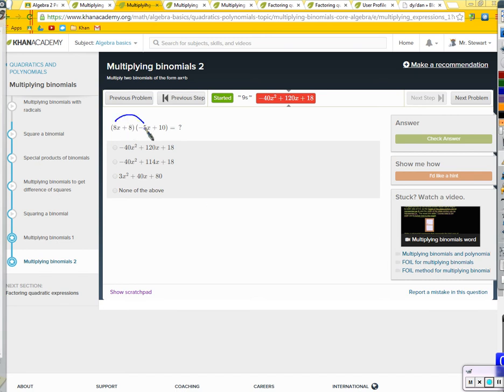So distribute the 8x. What's 8x times negative 5x? Negative 40x squared. Distribute the 8x to the 10. 80x. I've distributed the 8x and I'm done.